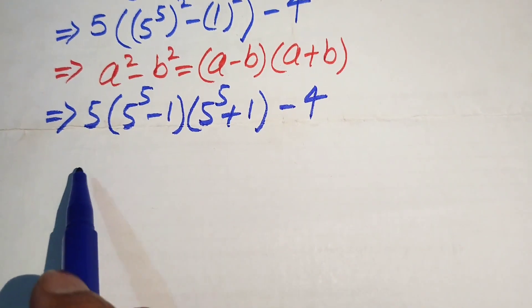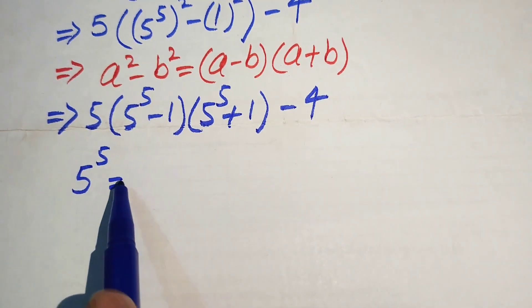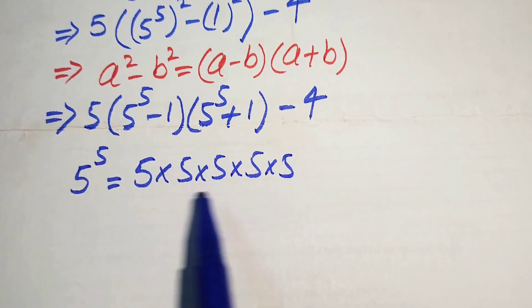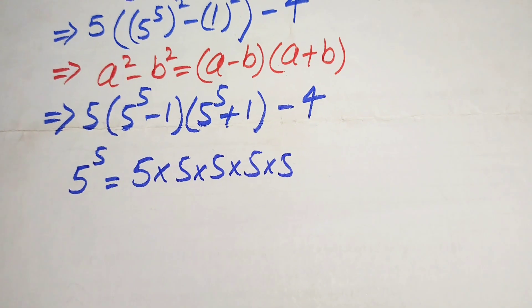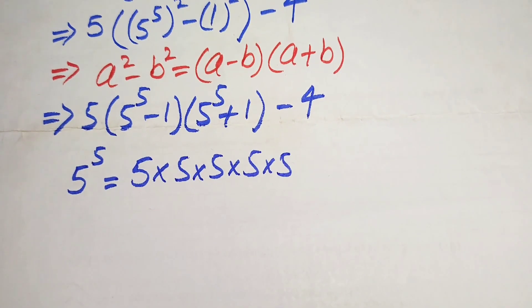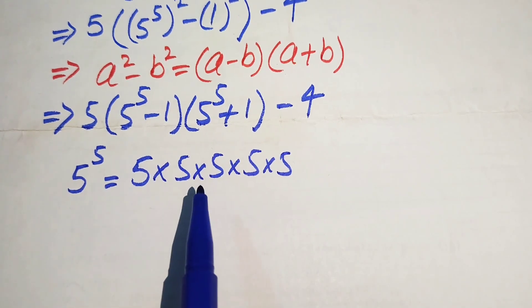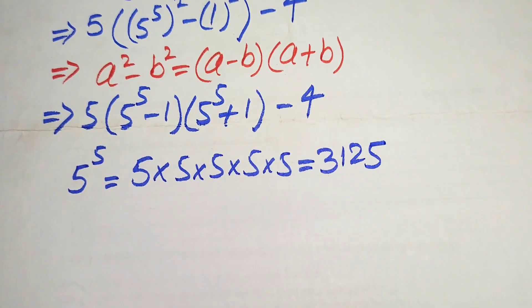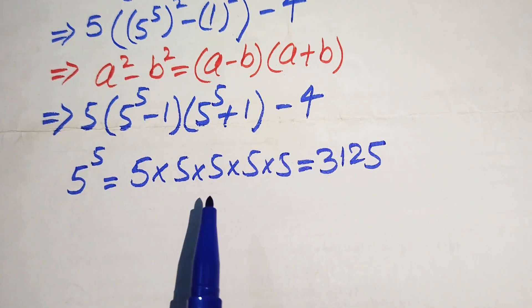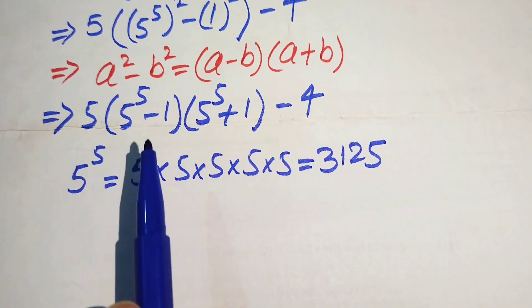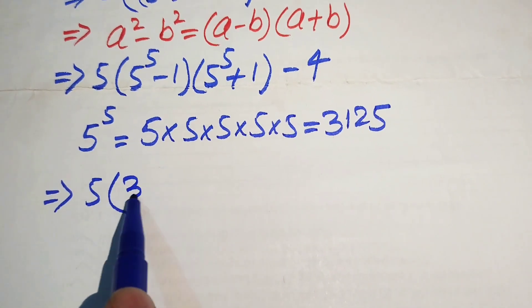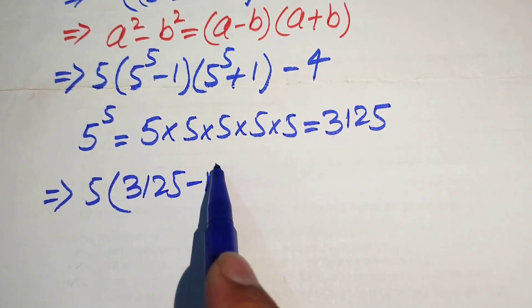Now we simplify 5 to the power of 5, which means multiplying 5 by itself five times. Using traditional multiplication, 5 times 5 times 5 times 5 times 5 equals 3125. We replace 5 to the power of 5 with 3125, giving us 5 into 3125 minus 1, times 3125 plus 1, minus 4.